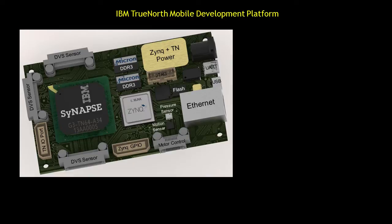To support the Zynq FPGA, we have flash memory on the right that does the configuration of the FPGA, as well as several Micron DDR3 memory blocks to provide storage. This board has a variety of standard interfaces: a JTAG interface for debugging, a UART interface, a USB interface, and an Ethernet interface.